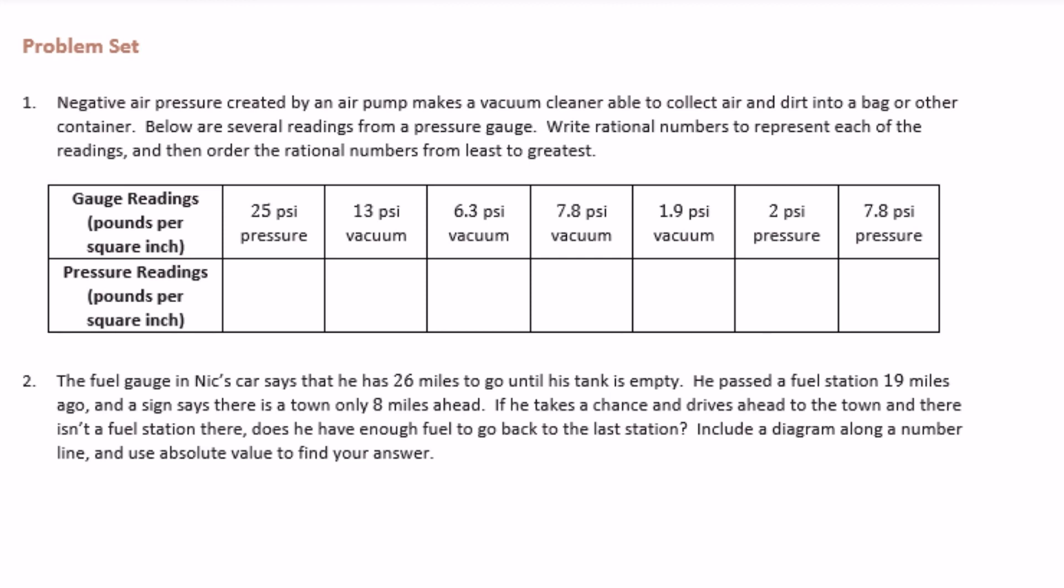Below are several readings from a pressure gauge. Write the rational numbers to represent each of the readings and then order the rational numbers from least to greatest.